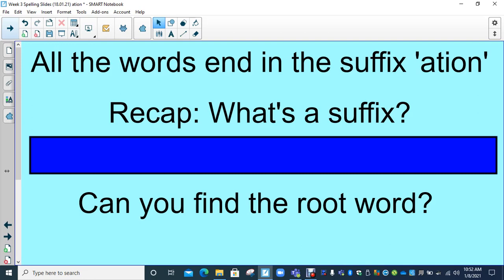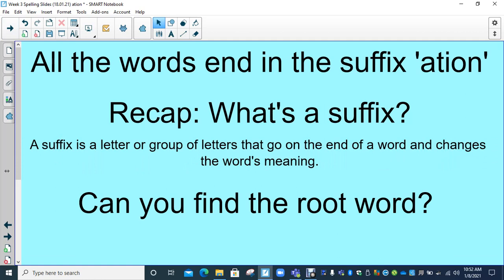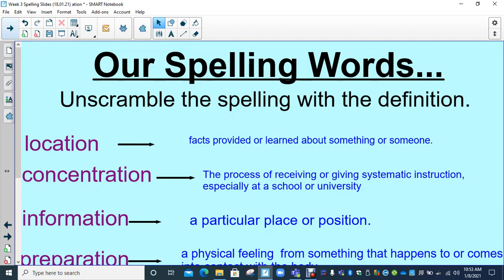With all of these words, they end in the suffix A-tion, A-t-i-o-n. So, let's quickly recap. What is a suffix? Pause the video here just to help you recall that. We know that a suffix is a letter or group of letters that go on the end of a word and it changes the word's meaning. Flick back and see if you can find the root word, the original word.